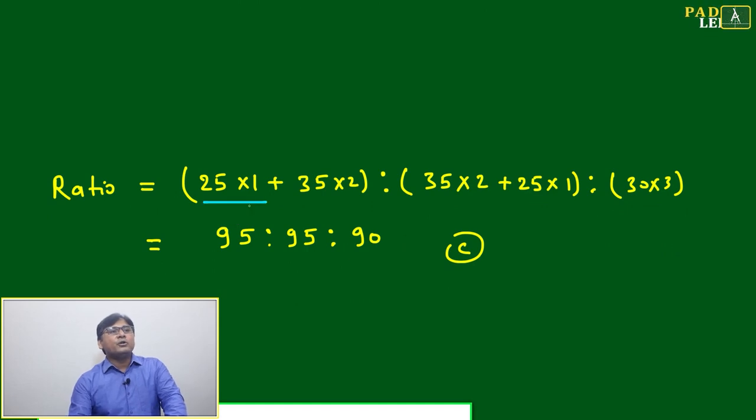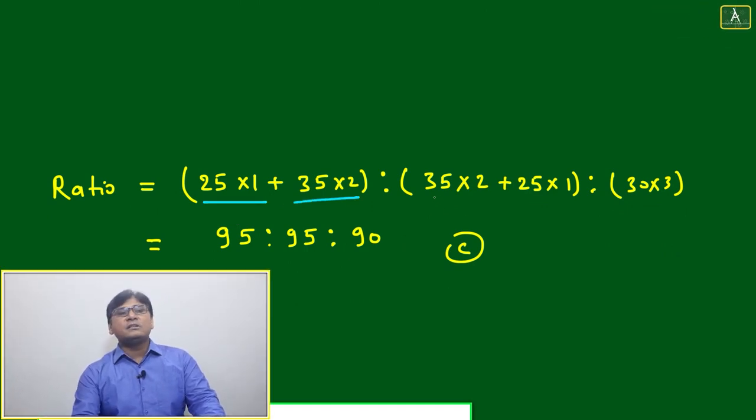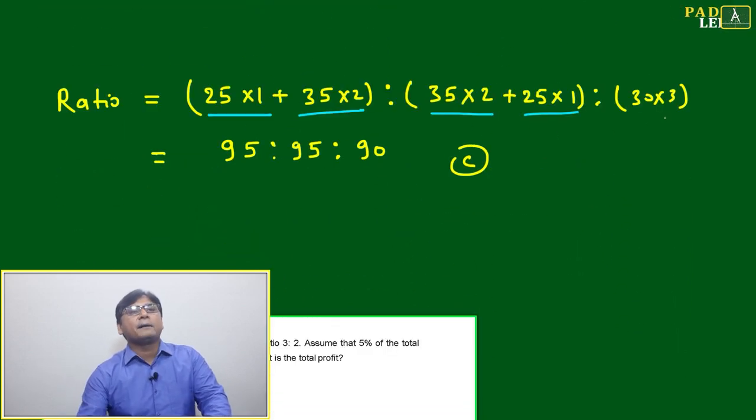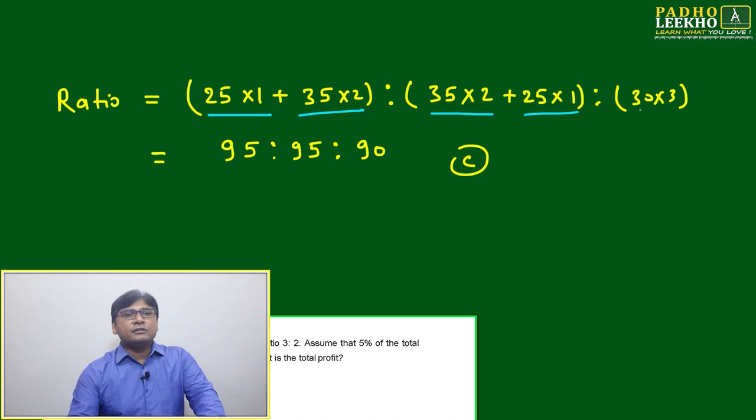For Priyam: 25 into 1 for one year, then 35 into 2 for the next two years. For Kureshi: 35 into 2 for two years, then 25 into 1 for one year, because after withdrawal it becomes 25 lakh, not 10 lakh remaining.